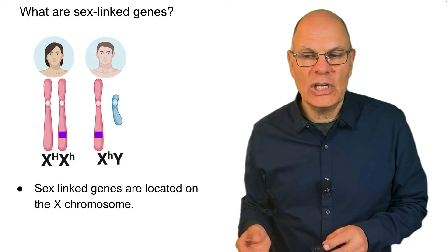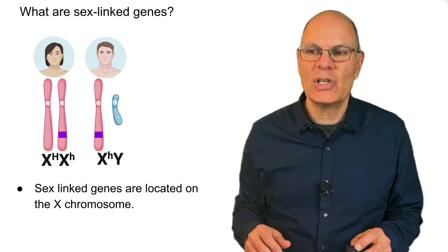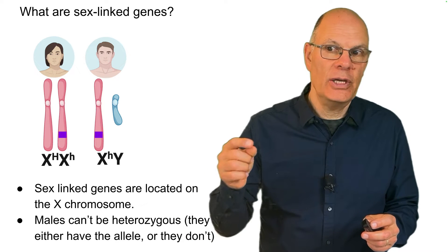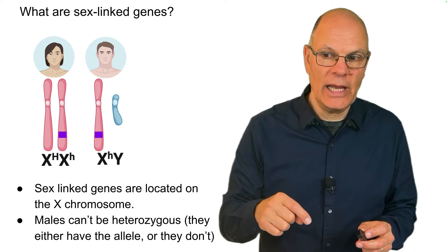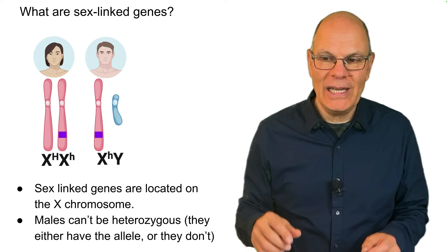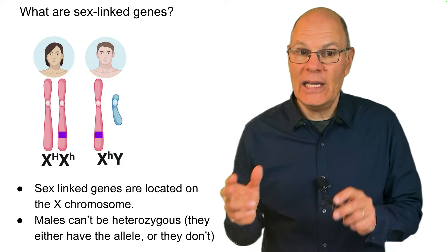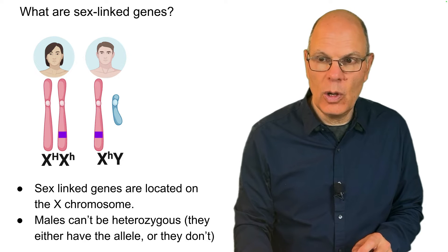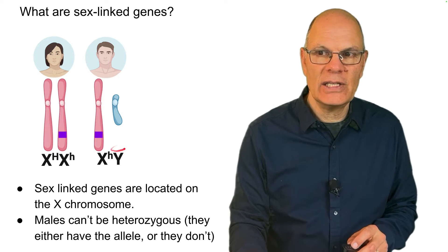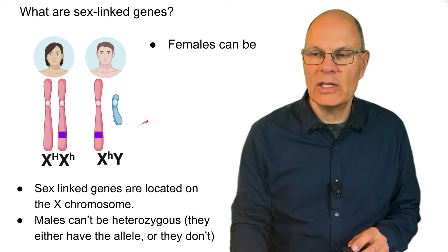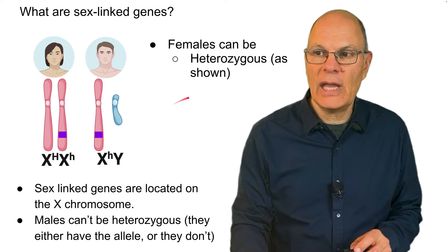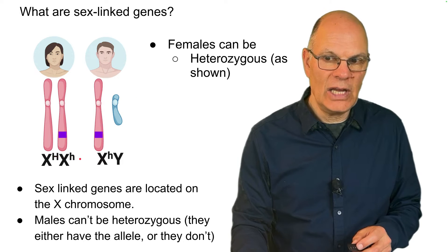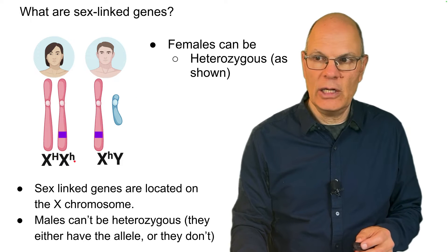Sex-linked genes are located on the X chromosome. Males, because the genes are located on the X chromosome, can't be heterozygous. They either have the allele or they don't — the whole heterozygous/homozygous distinction doesn't apply to males. But females can be heterozygous, as shown: X big H, X little h — a heterozygote.